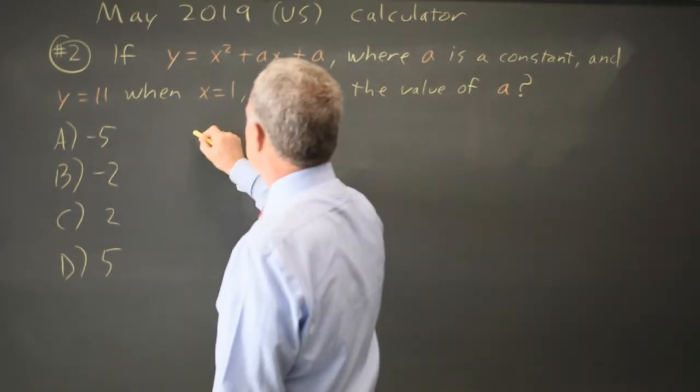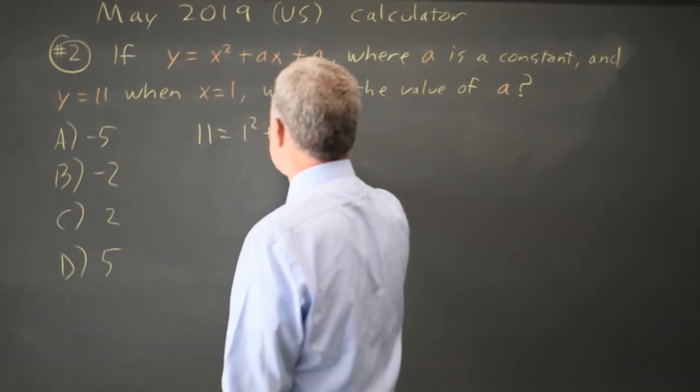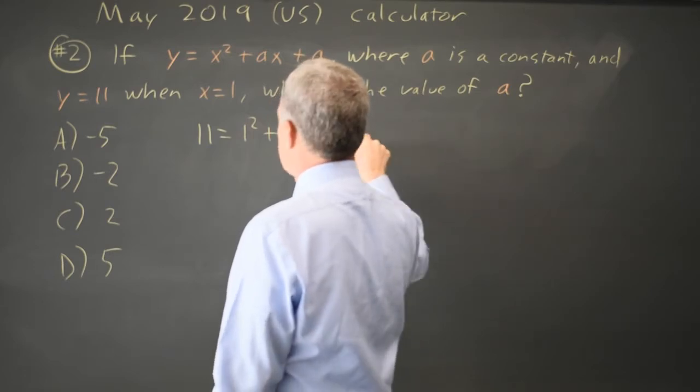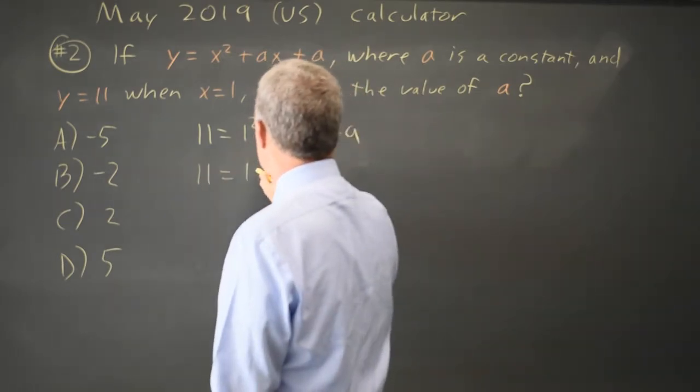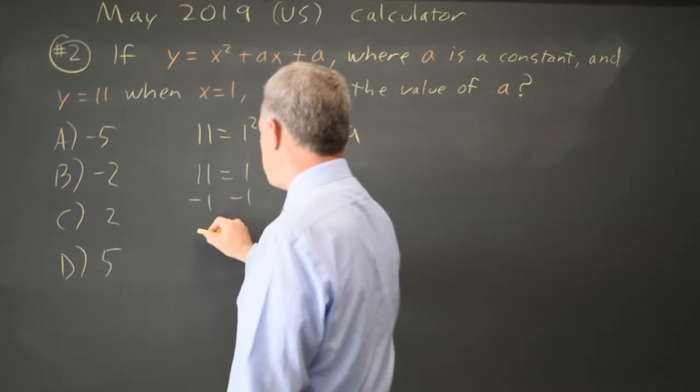So let's substitute in y equals 11 and x equals 1, giving us 11 on the left equals 1 squared plus a times 1 plus a, which is 11 equals 1 plus 2a.